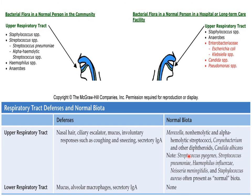The normal flora is composed of Streptococcus pyogenes, Streptococcus pneumoniae, Haemophilus influenzae (non-typeable), Neisseria meningitidis, and Staphylococcus aureus. The lower respiratory tract does not have any normal flora and is a sterile environment. To a lesser extent, Moraxella catarrhalis, non-hemolytic and alpha-hemolytic streptococci, Corynebacterium and other diphtheroids, and Candida albicans may be present as normal microbiota in the upper respiratory tract.